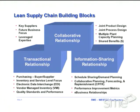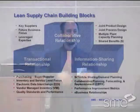The next building block is an information sharing relationship, which moves towards collaboration. Here, you're starting to share schedules, doing collaborative demand planning, looking together at future demand, and doing collaborative planning, forecasting, and replenishment. You begin to look at time buckets and when you make commits for bringing in certain parts from your supplier, with performance improvement metrics — not just metrics on past performance — and looking at e-business relationships.